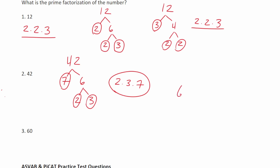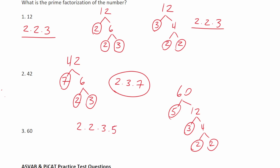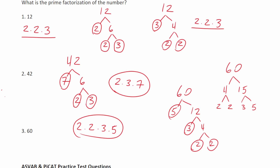Let's find the prime factorization of 60 now. I'm going to start by saying 5 times 12 is 60. 5 is prime, so I can't break that down any further. 12 can be broken down into 3 times 4, and 4 can be broken down into 2 times 2. So the prime factorization of 60 is 2 times 2 times 3 times 5. If you multiply that all out, you'll get 60. Now, let's say you broke down 60 into 4 times 15. 4 can be broken down into 2 times 2, and 15 can be broken down into 3 times 5. So the prime factorization, when we break down 60 this way, is the same: 2 times 2 times 3 times 5.